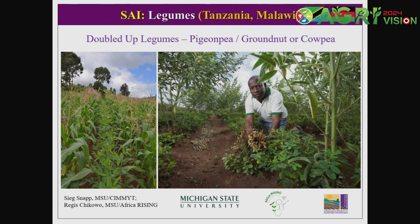Moving to East Africa — Tanzania and Malawi — we are promoting a doubled-up legume system. You have maize in the middle, then a taller legume like pigeon pea intercropped with it, and under the canopy of the pigeon pea you can grow a shorter crop like groundnut or cowpea. Now you have two legumes and one cereal. This utilizes below-ground resources like water and nutrients very effectively, and also above-ground in terms of light interception. It provides environmental benefits, biological nitrogen fixation, and organic matter from perennial leaf drop.